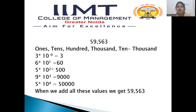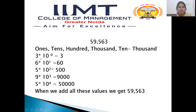So here you can see 59,563. In your earlier classes, you were asked to read it as ones, tens, hundreds, thousands, ten thousands. So here, if we write 3 into 10 to the power 0 — whatever the power is 0, it converts to 1 — so 3 into 1 is equal to 3. Then 6 into 10 to the power 1 will become 60, and 5 into 10 to the power 2. The powers of 10 are increasing constantly.